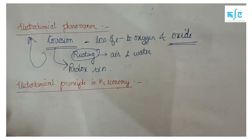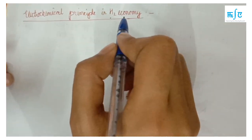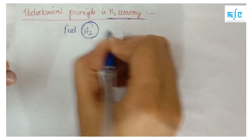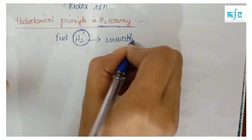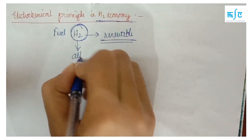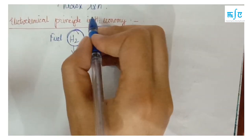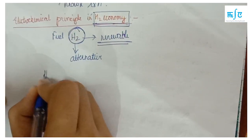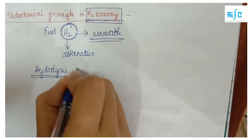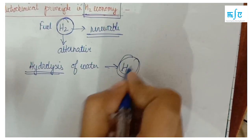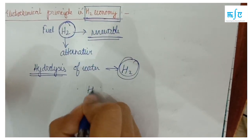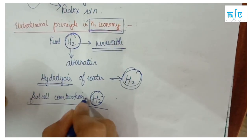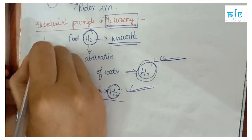The hydrogen economy is an important principle of electrochemistry. Hydrogen is a renewable and pollution-free alternative fuel. Electrolysis, which is an electrochemical process, is used to produce hydrogen. The hydrogen economy represents a better alternative fuel source driven by electrochemical processes.